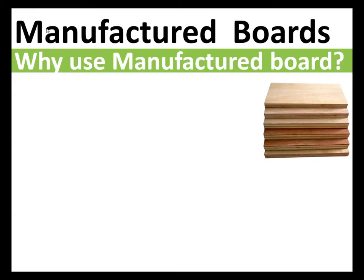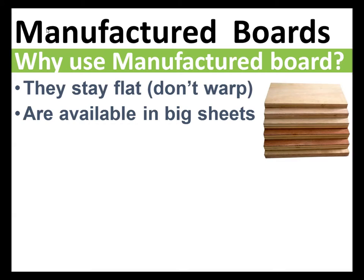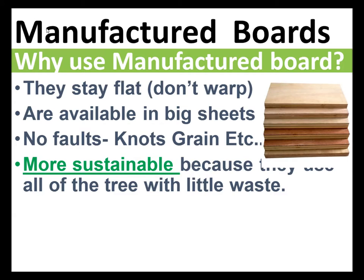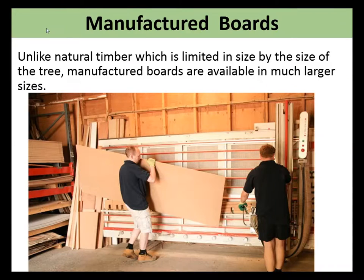We've got a picture of some plywood. Manufactured boards stay flat — they're not prone to warping or twisting. They don't have any faults that timber has, such as knots or grain. They're available in large sheets, typically eight foot by four foot. They're more sustainable because they use much more of the tree with less waste, and they're cheaper to buy than natural or solid timber.